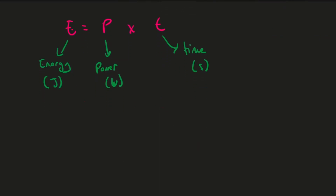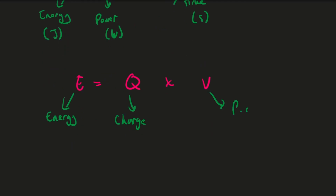The other equation, more specific to electricity, is that energy transferred equals charge flow multiplied by potential difference: E = QV. The energy transferred is in joules, charge flow Q is in coulombs, and potential difference V is in volts.